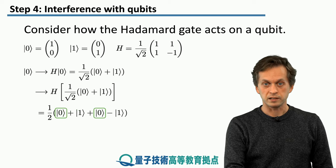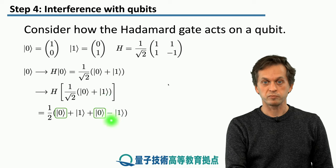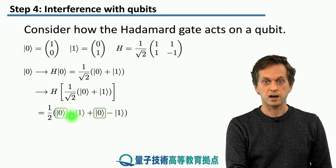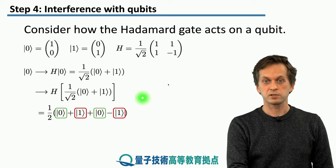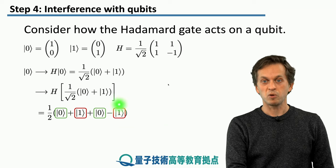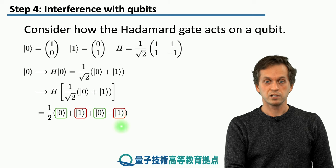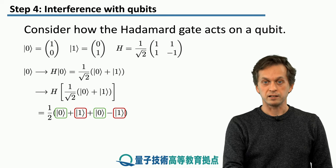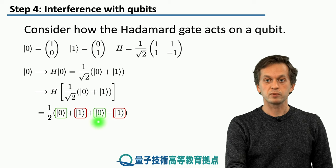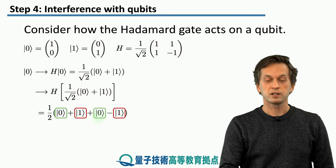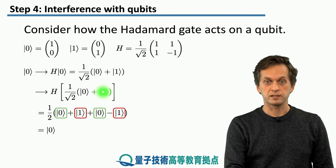You can see that these terms, they both have a positive probability amplitude. Plus a half, plus a half. Whereas the other two terms have opposite amplitudes. They've got plus a half and negative a half. So the effect of that is that the probability amplitudes for ones cancel, whereas the probability amplitudes for the zeros, they constructively interfere.